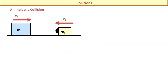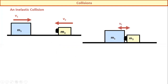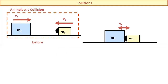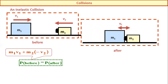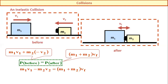We will explain inelastic collision first. In inelastic collision, two masses m1 and m2 have velocities v1 and v2. This is the condition before collision. After collision, we know momentum before equals momentum after. Before collision total momentum is m1v1 − m2v2, where v2 is negative because it is in the opposite direction to v1.